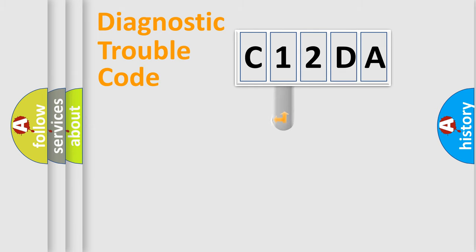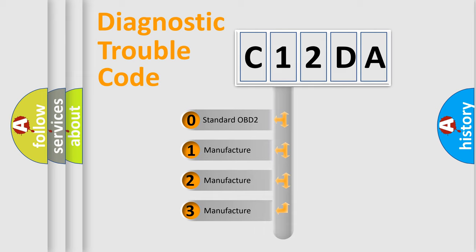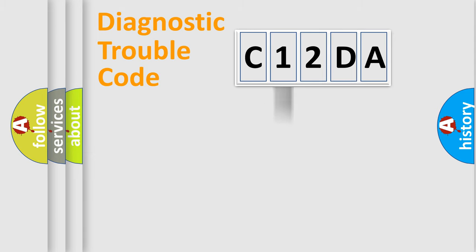This distribution is defined in the first character code. If the second character is expressed as zero, it is a standardized error. In the case of numbers 1, 2, or 3, it is a more specific expression of the car-specific error.